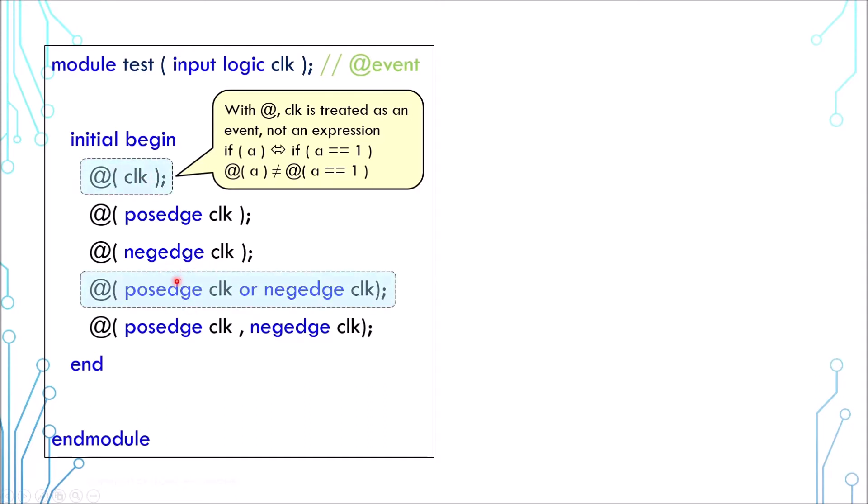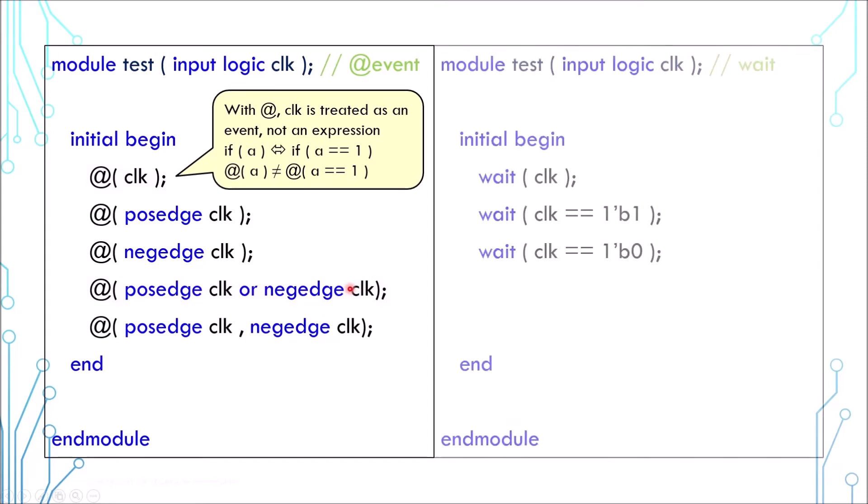@(clk) is the same as @(posedge or negedge) of the clock. Apart from @, there is another way to wait for an event. The syntax is 'wait'.